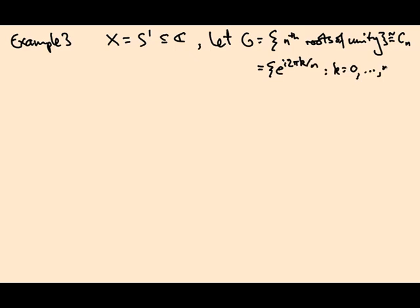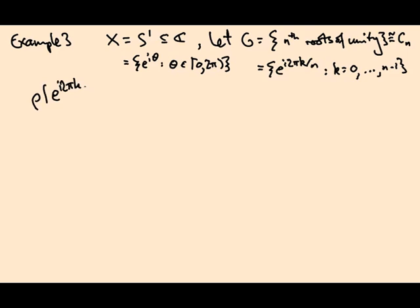So remember the roots of unity are the e to the i 2π k over n's, and k is 0 up to n minus 1. And these guys are the points e to the iθ.